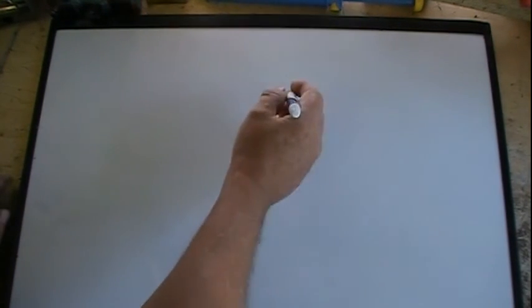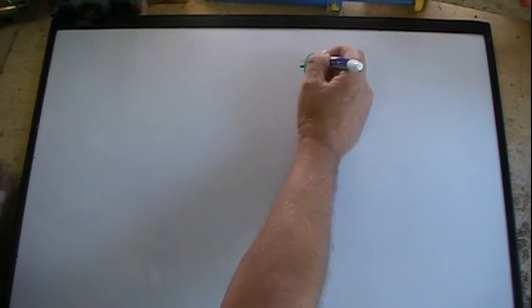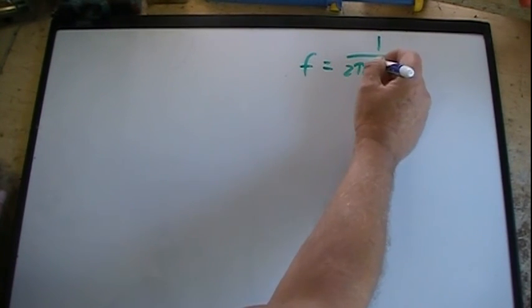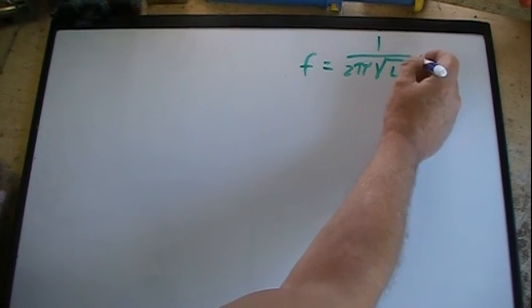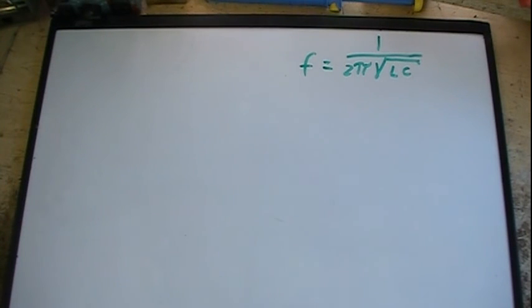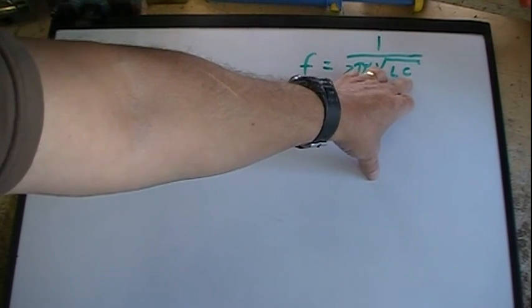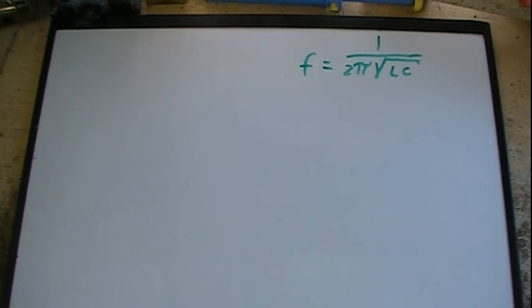Before we do that, we're going to do a little math, but I'm going to be the one doing it. You don't have to memorize this, but it will kind of explain some things. I have shown this formula before: if you want to know the resonant frequency, it equals 1 over 2π times the square root of L and C, where L is inductance and C is capacitance. Frequency will be in hertz, inductance in henrys, and capacitance in farads. So where does that formula come from?